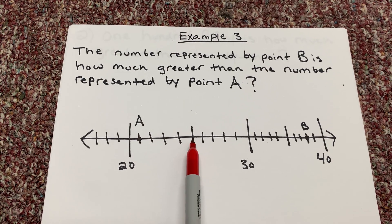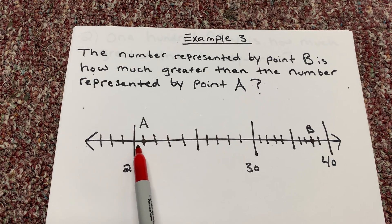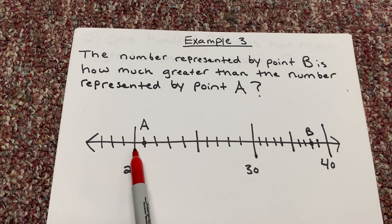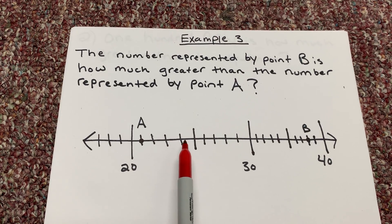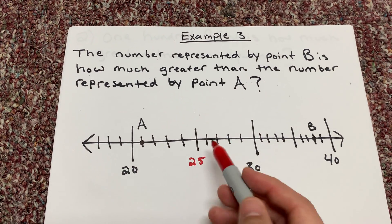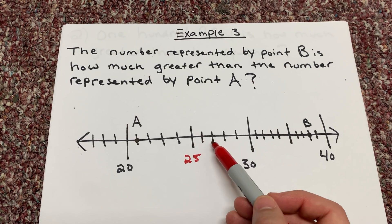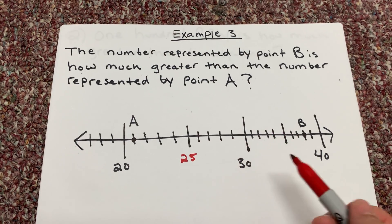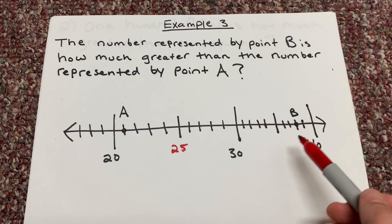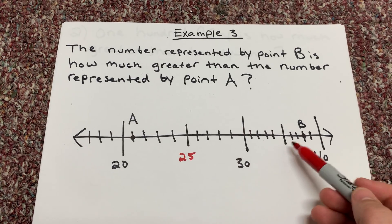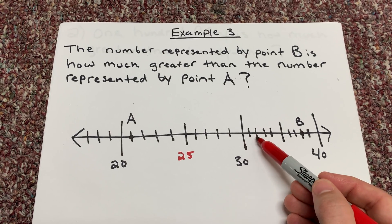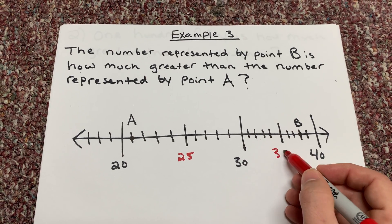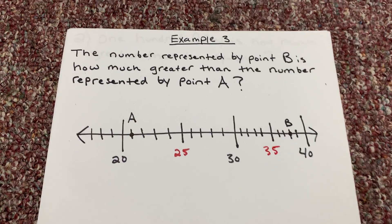There's a slightly bigger tick mark, then 1, 2, 3, 4 — it looks like they're counting by 5s. So: 20, 21, 22, 23, 24 — this must be 25. Let's double check: 26, 27, 28, 29, 30. Yes. So the smaller tick marks count by ones, and the bigger tick marks are by 5s. Continuing: 31, 32, 33, 34, 35. That's how they're counting on this number line.